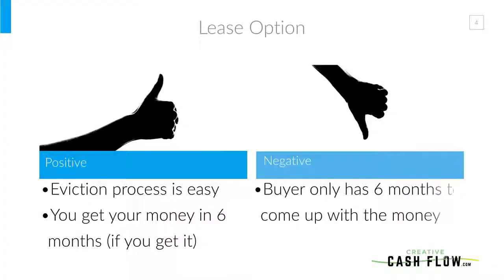A negative is that the buyer only has six months to come up with the payment, so there's only so much money people can make in that period. You've got to stay within their means — you don't want to set them up for failure. You've got to make sure if you're going this route that they are able to succeed. In states that allow more than six months, you've got more options and can do longer periods.